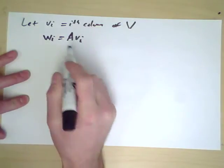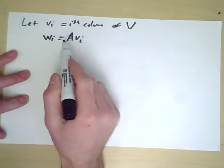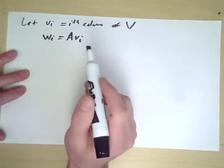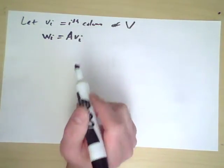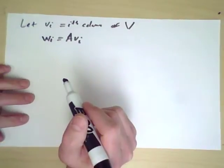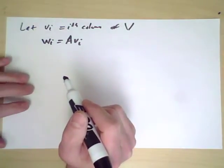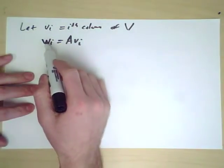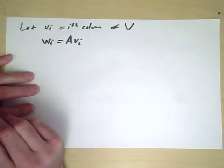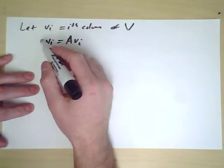What I want to do is I want to compare what the W's look like. We know that the Vi's are all perpendicular, they're all orthogonal. In fact, they're all length one because V after all was a unitary matrix. So Wi, we want to understand how those behave.